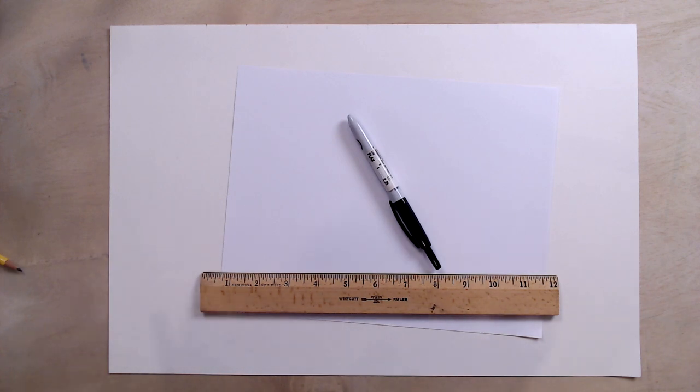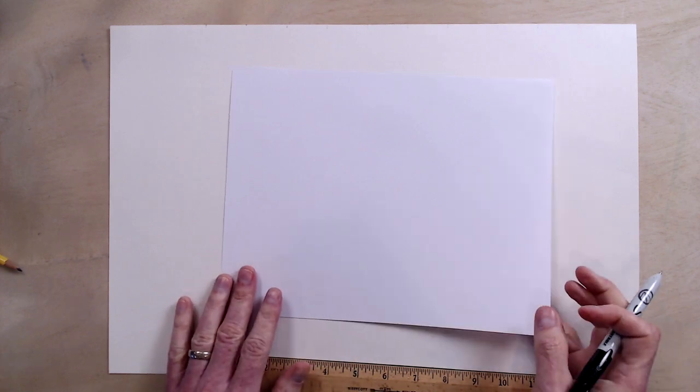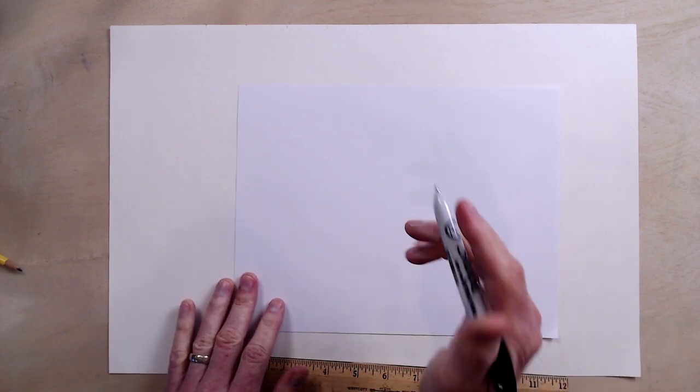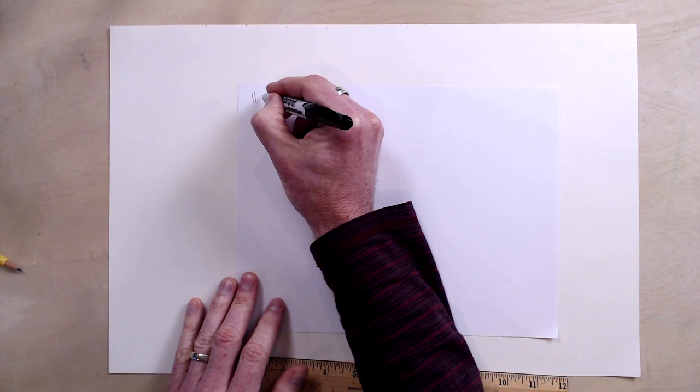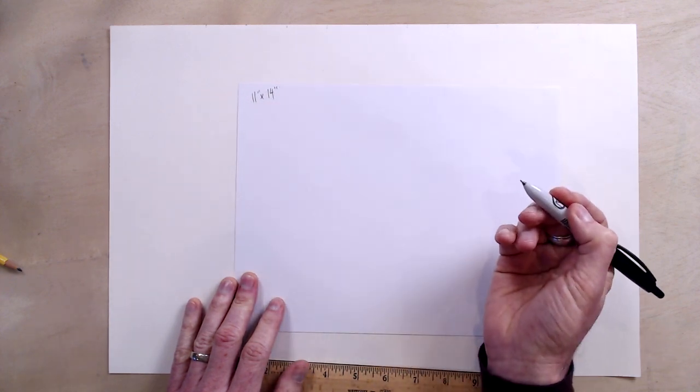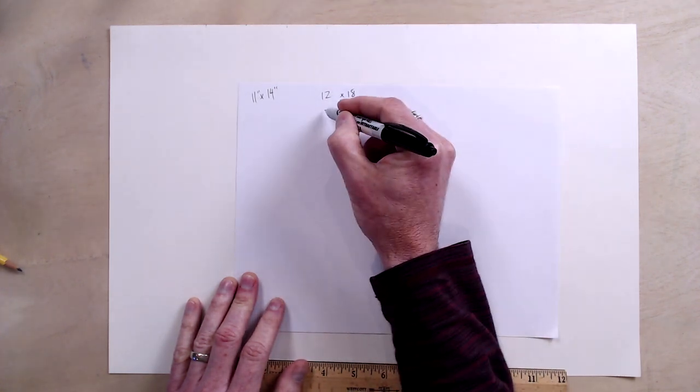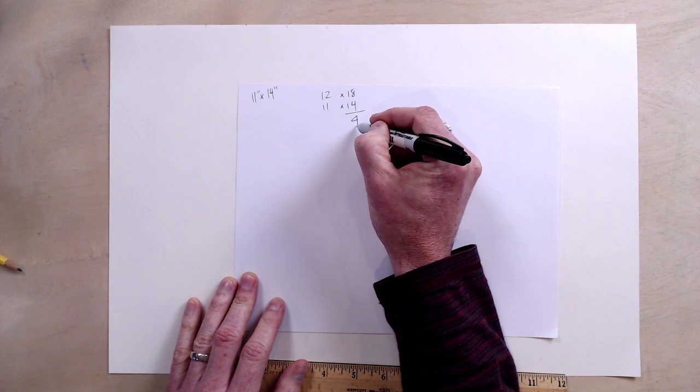So those are the kind of the gist of things. But I need to point out a few other things. For our purposes with this, we will be making an 11 by 14 inch rectangle on our 12 by 18 piece of paper. If this is our piece of paper and this is our rectangle, this tells us...